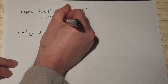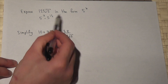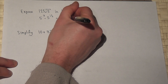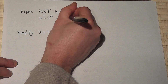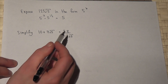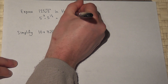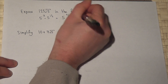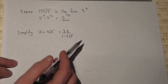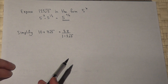When we multiply, we just have to add the powers. So this is the same as 5 to the power of 3 plus one half, which is 3 and a half, or 7 over 2. So k equals 7 over 2.